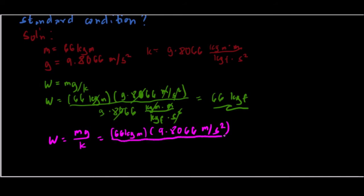All over the constant k, which is 1 kilogram-mass·meter over newton·second squared. We cancel seconds squared, then cancel kilogram-mass, and we are left with Newtons. That gives us 66 times 9.8066 over 1.